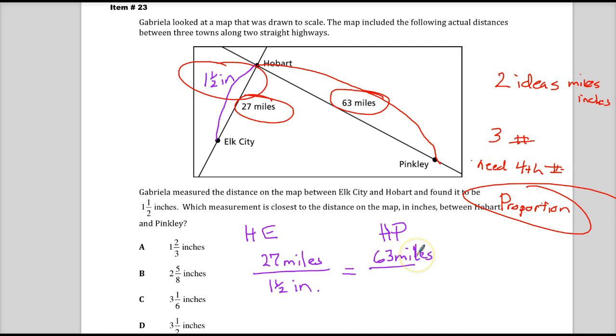Some people that I would work with would say okay, what would I have to multiply 27 by to get 63. I would just use division and then multiply that by one and a half. But I'm not going to do that. I'm going to do cross multiply and divide.